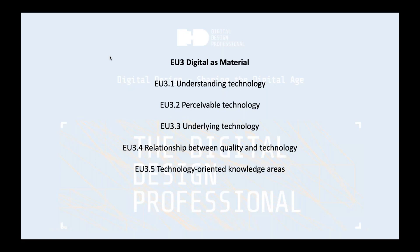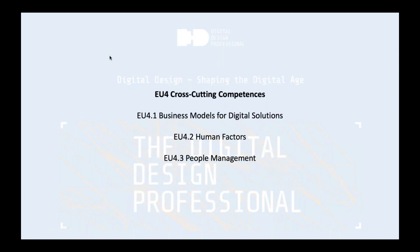The third chapter deals with digital as material — the same structure I already introduced. We spend some time introducing people to technology, talking about perceivable and underlying technology. We talk a lot about quality and technology, because most quality characteristics of a digital solution heavily rely on the technology used. For example, the iPhone is a great smartphone because the processor, software, and design all work so closely together. Finally, we present several technology-oriented knowledge areas. For example, we talk about the study of algorithms — which may seem unrelated to digital design, but understanding how searching, sorting, or other algorithms work is a good way to study the capabilities of software and digital technology.